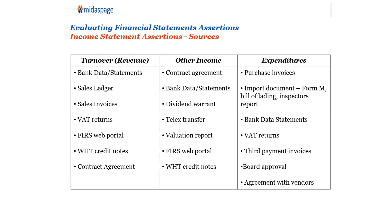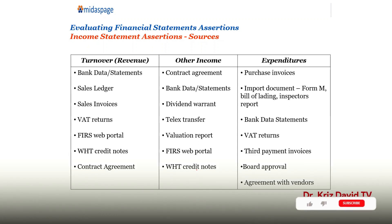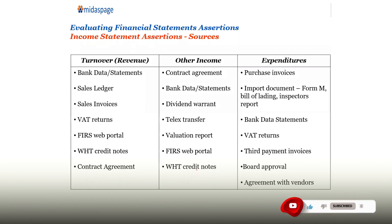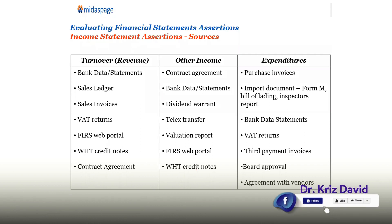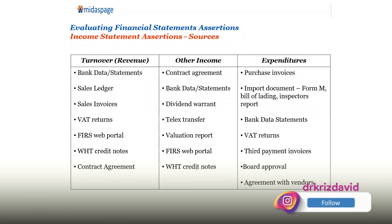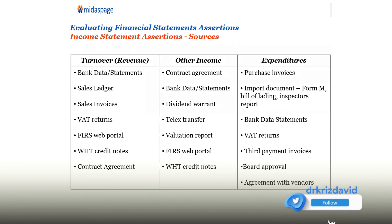Telex transfer relates to when you receive income from abroad or transfer money abroad. For instance, when a company receives income from abroad and the income is paid through an approved CBM channel — that is, through a recognized bank — and it is reported in the account, the document that shows that a certain amount was transferred is called a telex transfer.